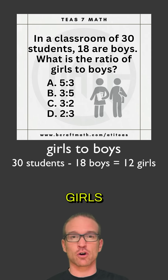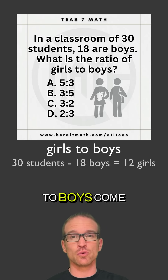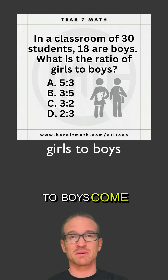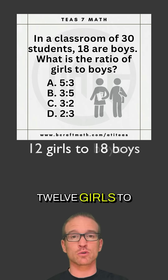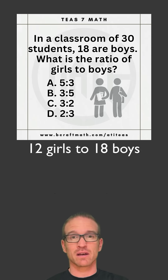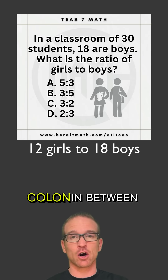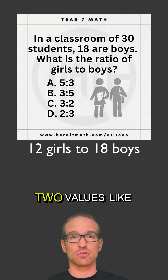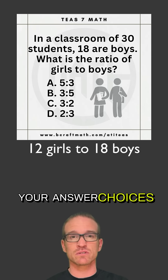Now the ratio of girls to boys — girls comes first, boys comes second. 12 girls to 18 boys. We can write ratios as fractions or we can put a colon between two values, like you see in your answer choices.